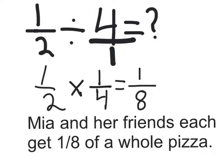So, one half times one fourth equals one eighth. This is because one times one is one, and two times four is eight. So, Mia and her friends each get one eighth of a whole pizza.